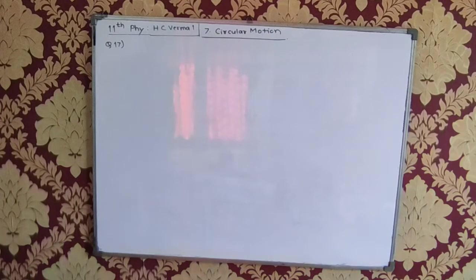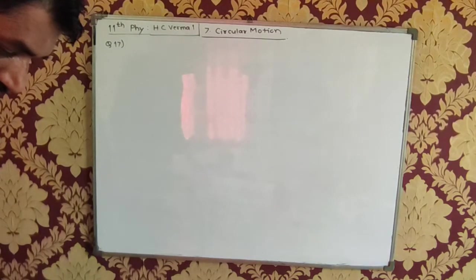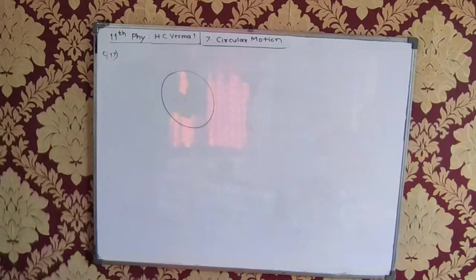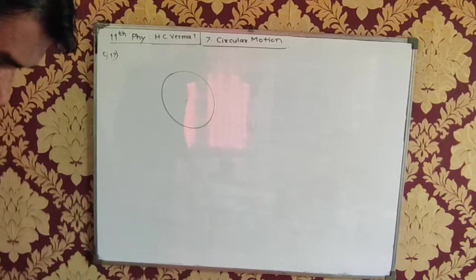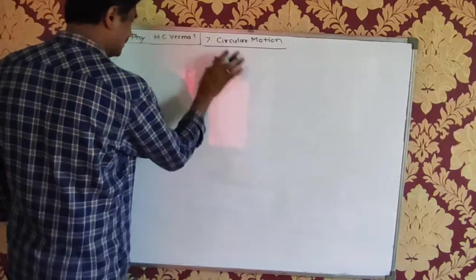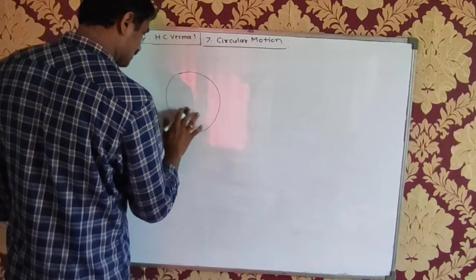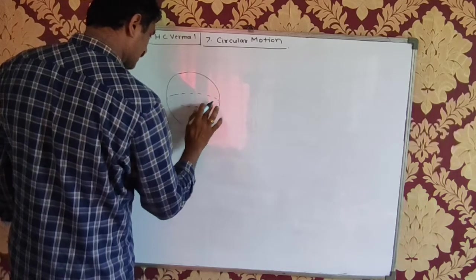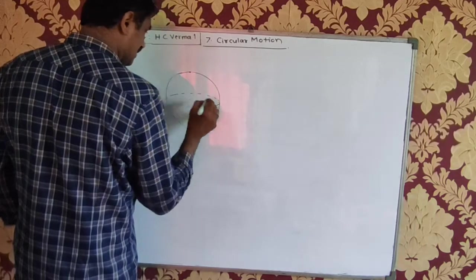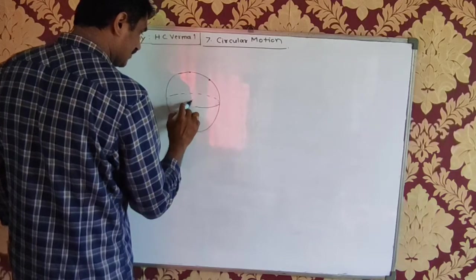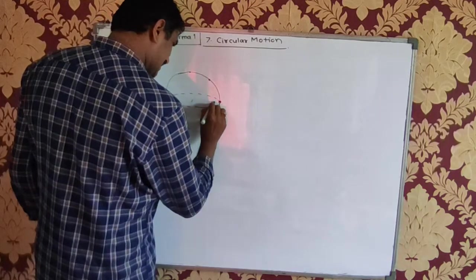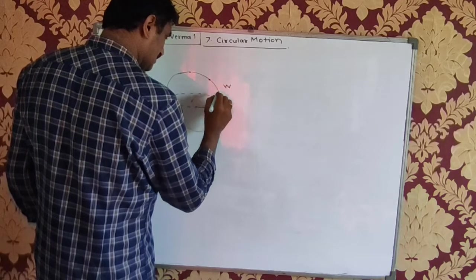Question number 17: A person stands on a spring balance at the equator. Let us say this is the earth, with the center of the earth and the equator. A person is standing at the equator, and the weight of any body acts toward the center of the earth, so the person's weight acts in that direction — W = mg.